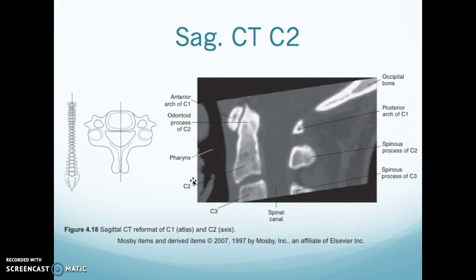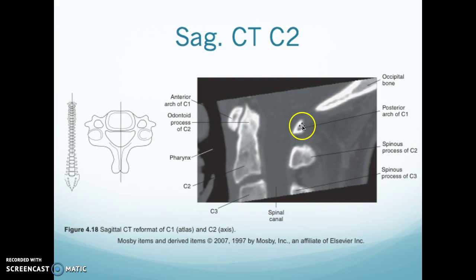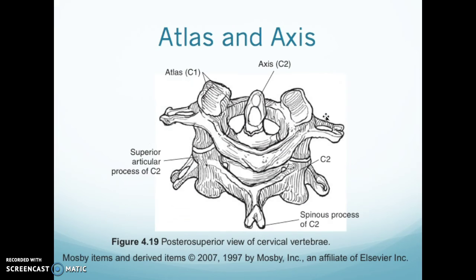This is a sagittal view CT. This is your anterior arch of C1, and this is C2 with your odontoid coming up. Here's the posterior arch of C1 and the spinous process of C2, and this is your occipital bone coming down. This is a reformatted image looking at C1 and C2 where it fits together — it just gives you an idea of how it all comes together.